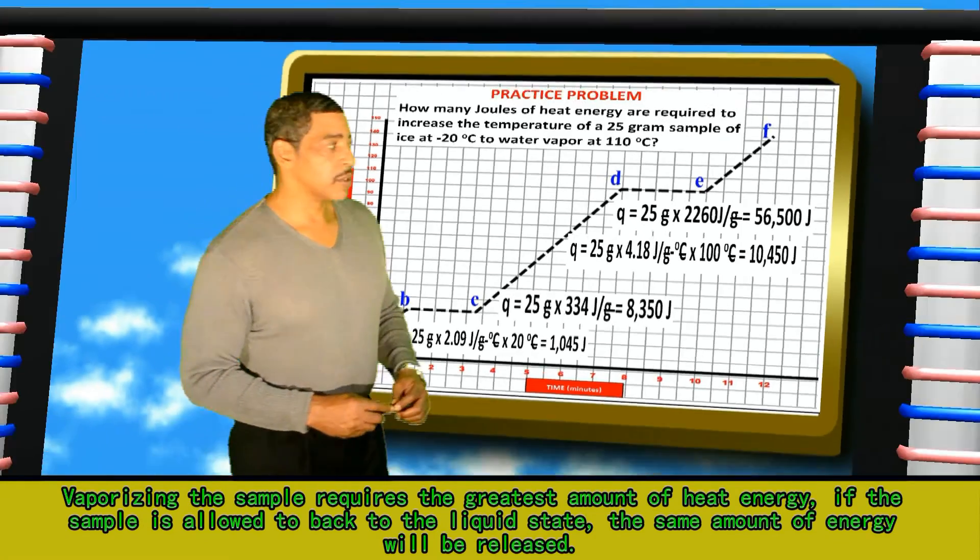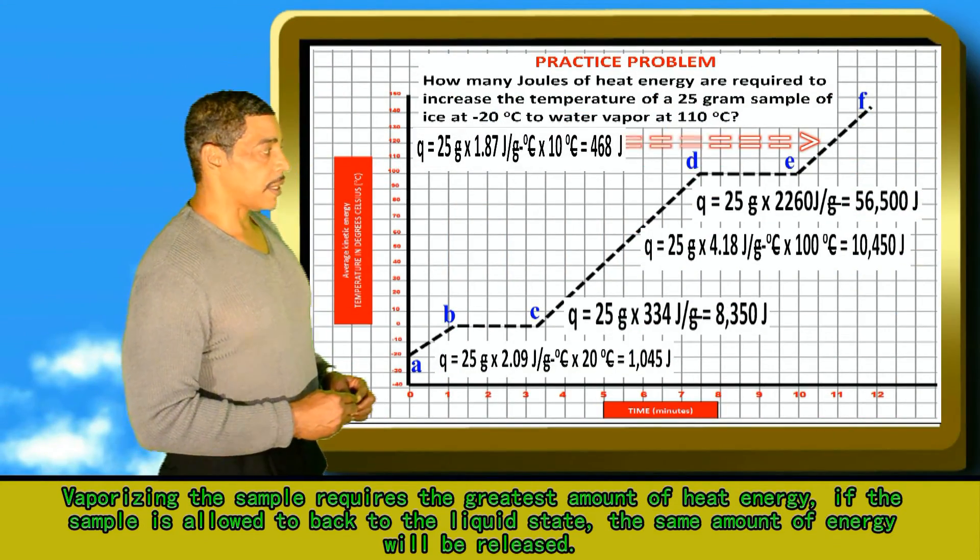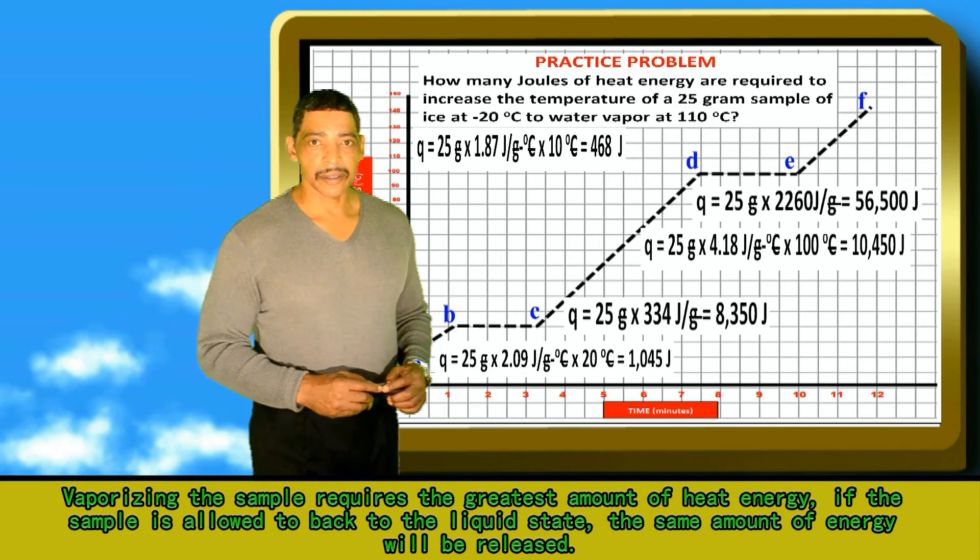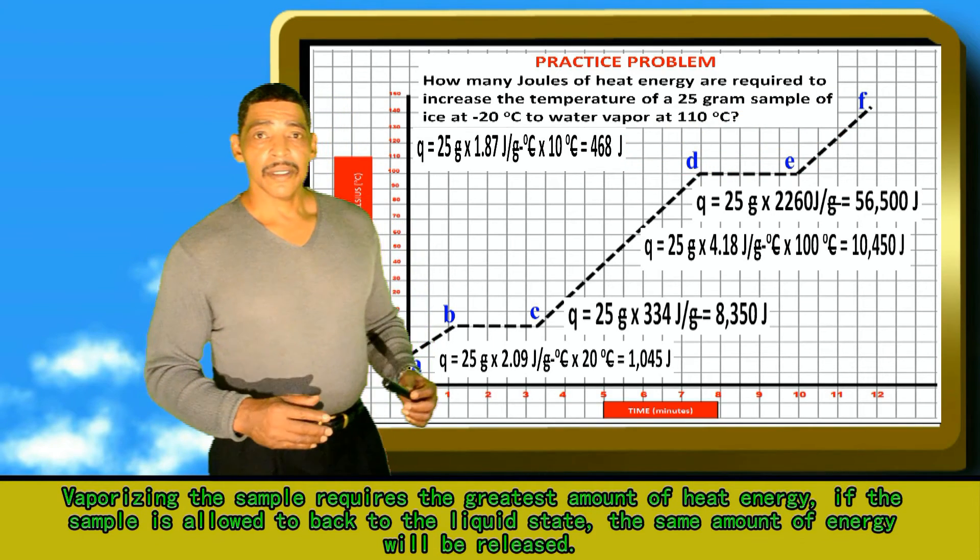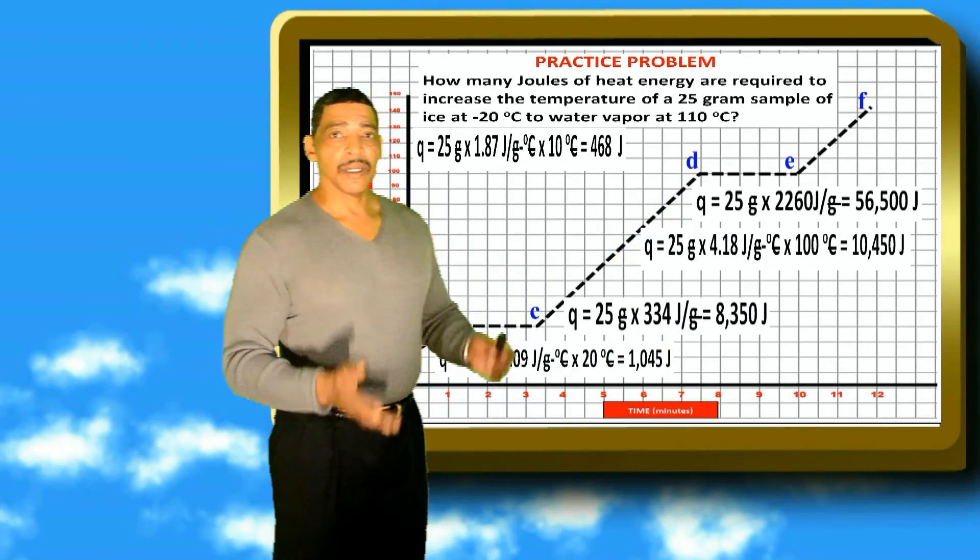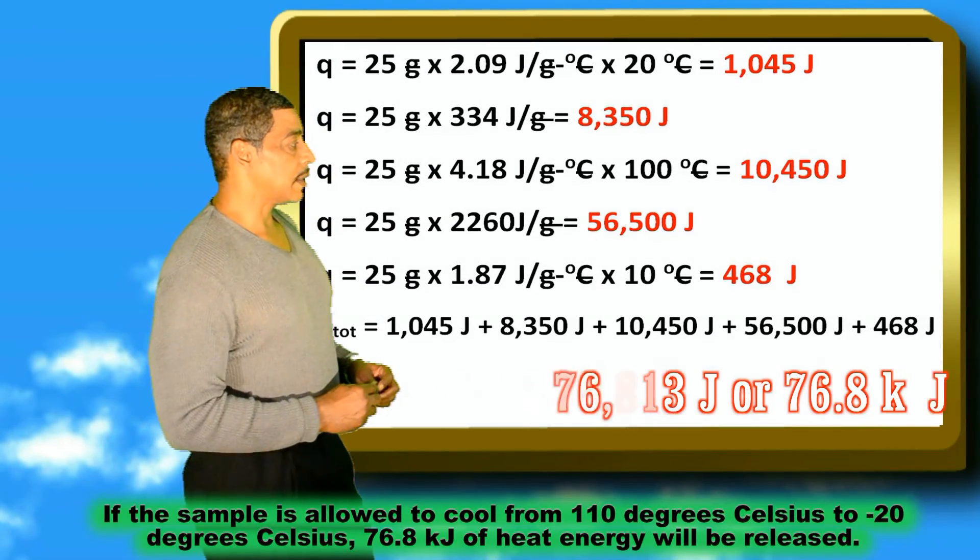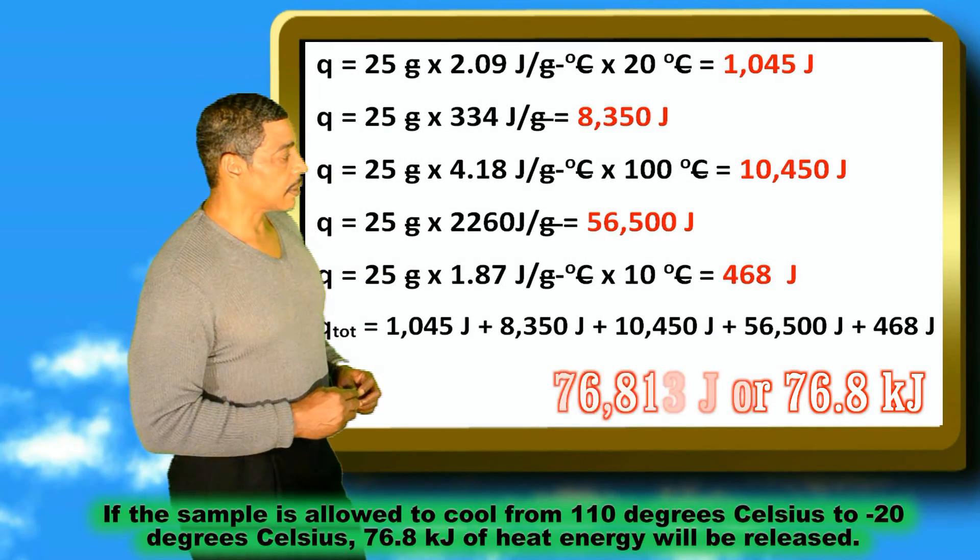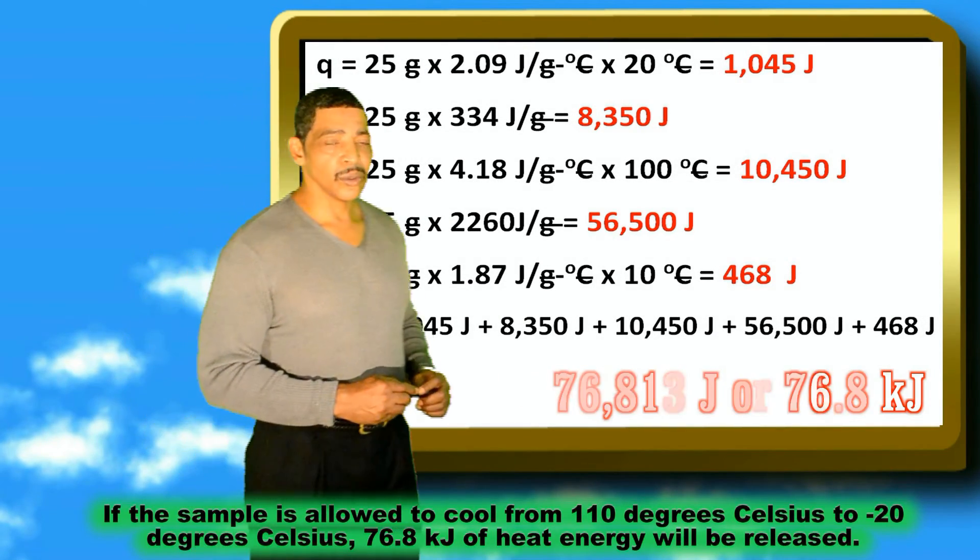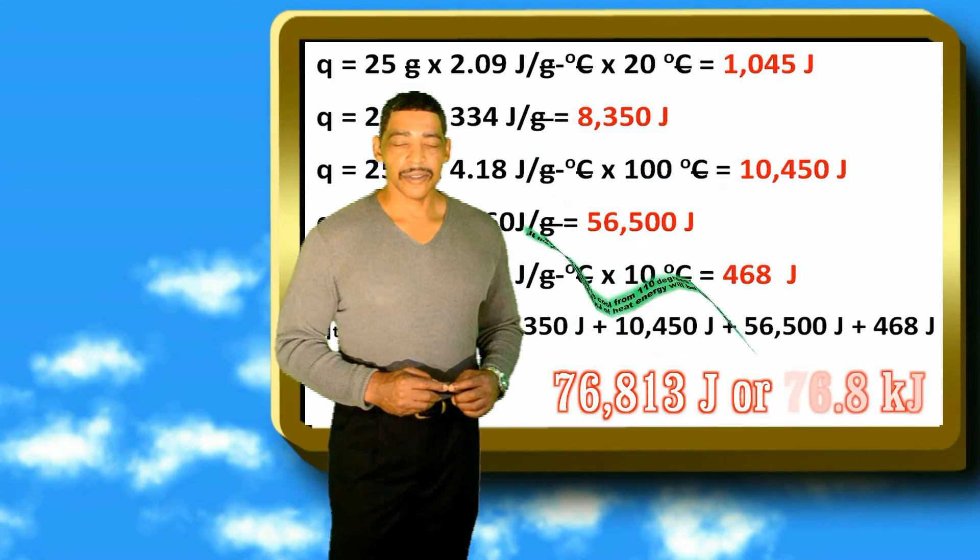To increase the temperature of the vapor by 10 degrees, 468 joules are required. Now in order to determine the total amount of energy required, we simply add the products. And the total amount of energy required is 76,813 joules or 76.8 kilojoules.